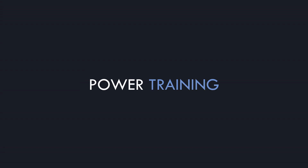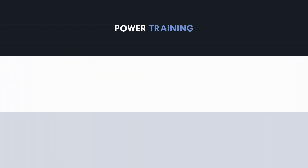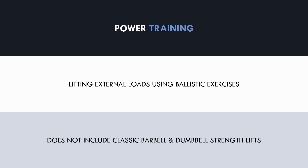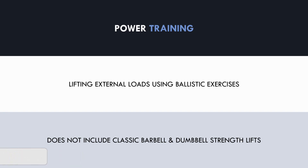First and foremost we need to establish what we mean when referring to power training. For this video we will define power training as moving external loads using ballistic exercises. Ballistic exercises are those which involve complete acceleration through the entire movement, including exercises like jumping and throwing. Power training does not refer to classic strength exercises such as the squat or bench press, even if used with lighter loads and lifted with fast velocities. This is because classic barbell and dumbbell exercises involve a deceleration phase and ultimately come to a stop at the end of the range of motion. Therefore, no matter how fast they are moved, they are not ballistic exercises.